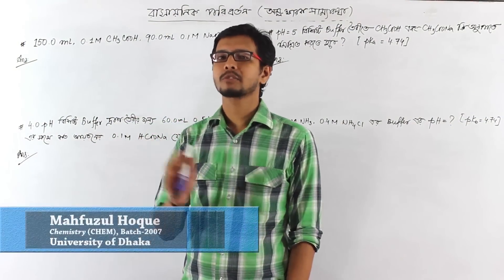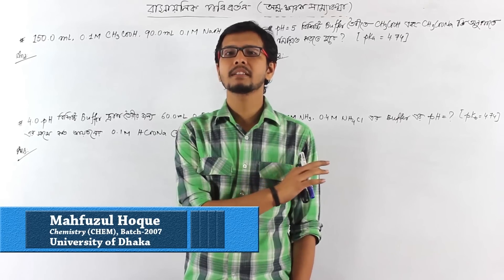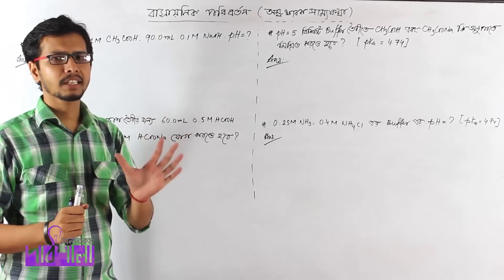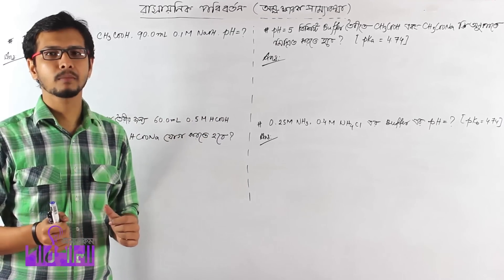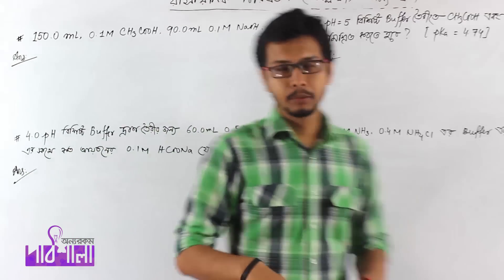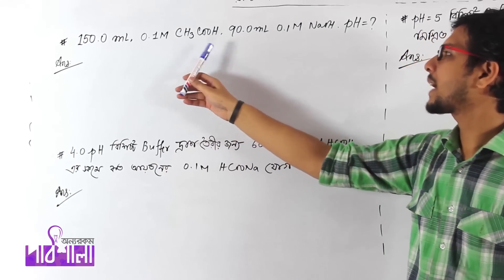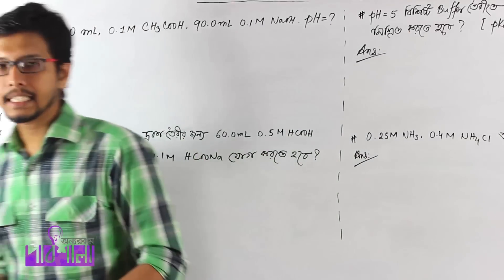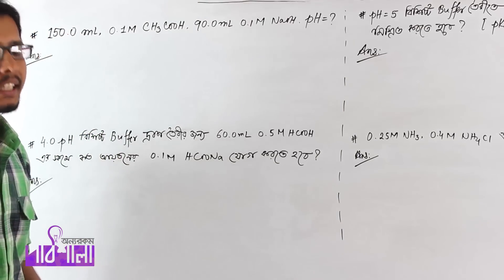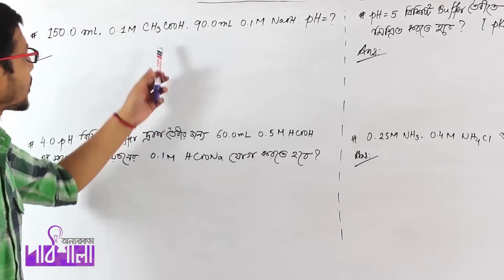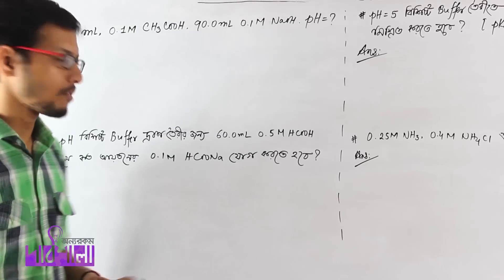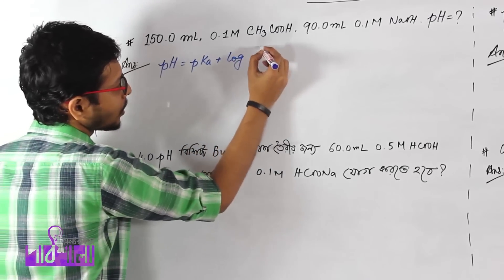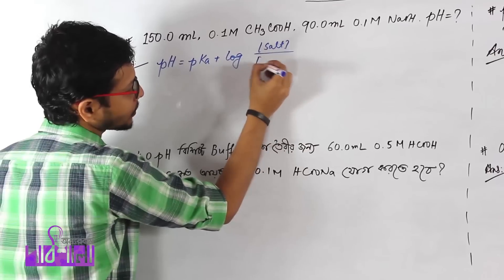The first thing I want to do is to take a look at the buffer system. If you look at the pH system, you can see the buffer system and the buffer system related problems. If you look at the buffer system, you can see pH is equal to pKa plus log concentration of salt divided by concentration of acid.